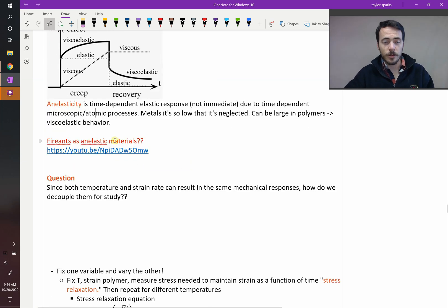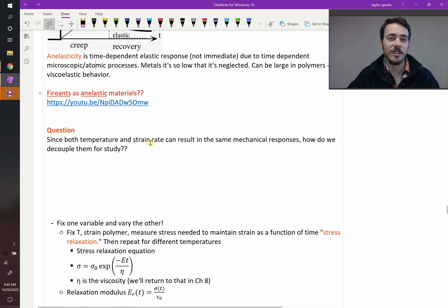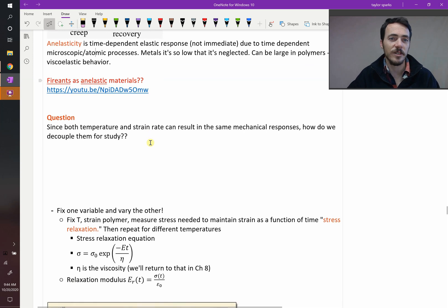By the way, if you want to see a really cool example of anelastic behavior, this guy at Georgia Tech does work on fire ants and they're pretty wild. So I'll share that link in the description of this video.